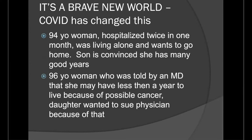I want to share a couple of cases from before COVID, because I think things have changed. One was a 94-year-old woman hospitalized twice in one month, living alone and wanting to go home, while the son was convinced she had many good years left. She eventually got on hospice after the second hospitalization and died within a month. Then there was a 96-year-old woman told by a physician she might have less than a year to live due to possible cancer. The daughter wanted to sue the physician because she had told her 96-year-old mother she might have cancer.